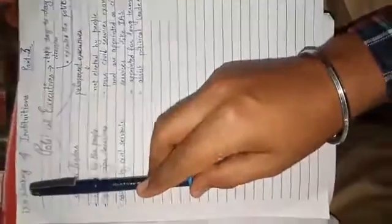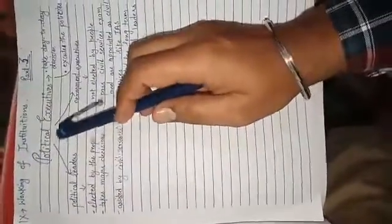Students, this is part 3 of the chapter 'Working of Institutions' for Class 9, and the topic is political executives. Who are political executives? Let me tell you that these are the ones who take day-to-day decisions and execute the policies.